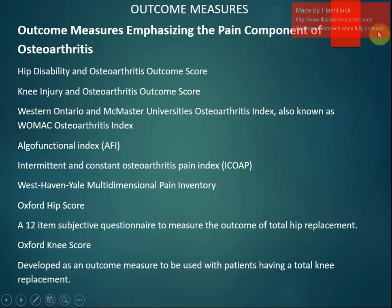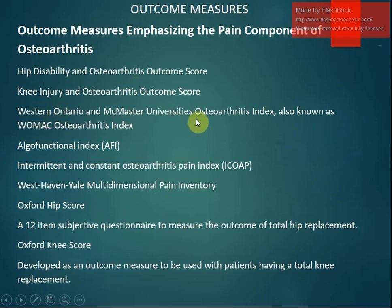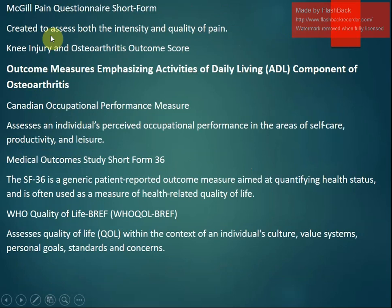Outcome measures include the Hip Disability and Osteoarthritis Outcome Score, the Knee Injury and OA Outcome Score, and the Western Ontario McMaster University Osteoarthritis Index — all emphasizing the pain component. Others include the Intermittent and Constant Osteoarthritis Pain Index, the West Haven-Yale Multidimensional Pain Inventory, and the McGill Pain Questionnaire Short Form.